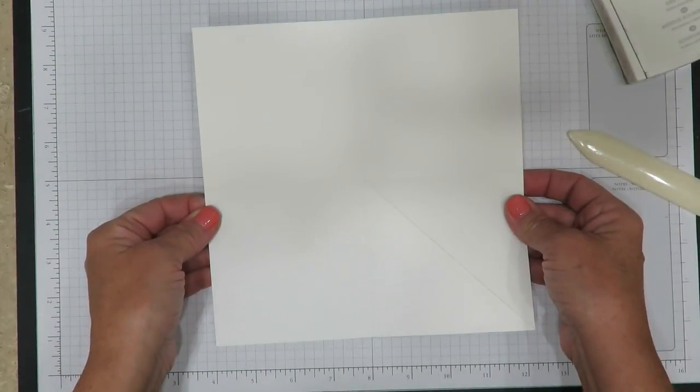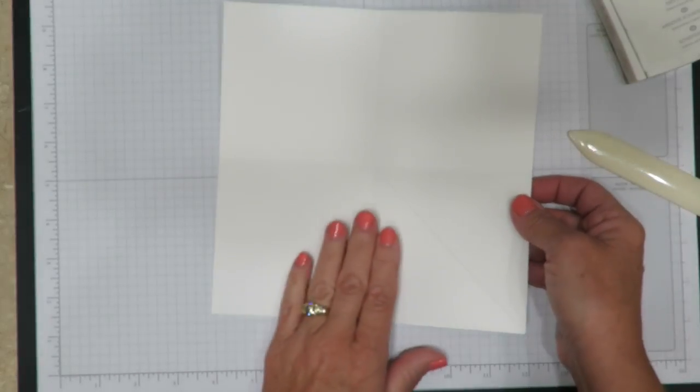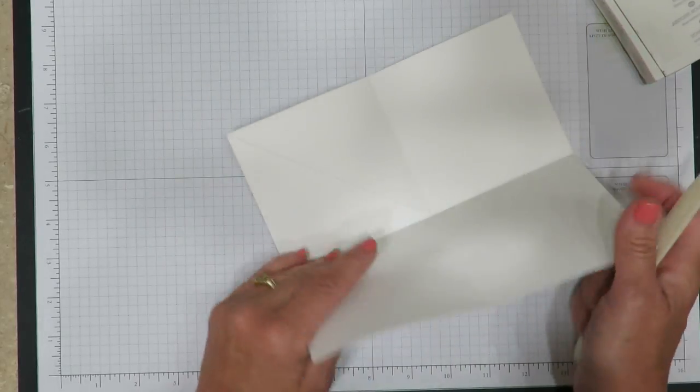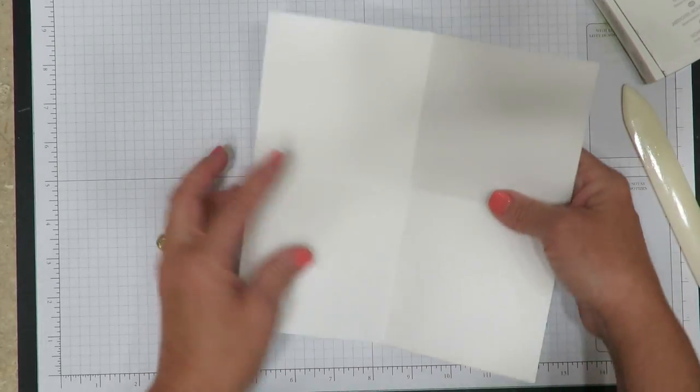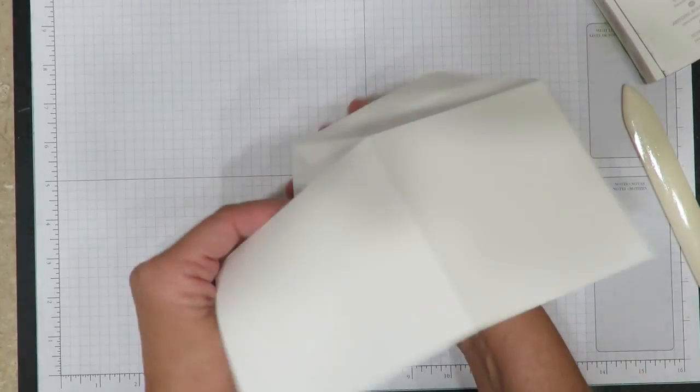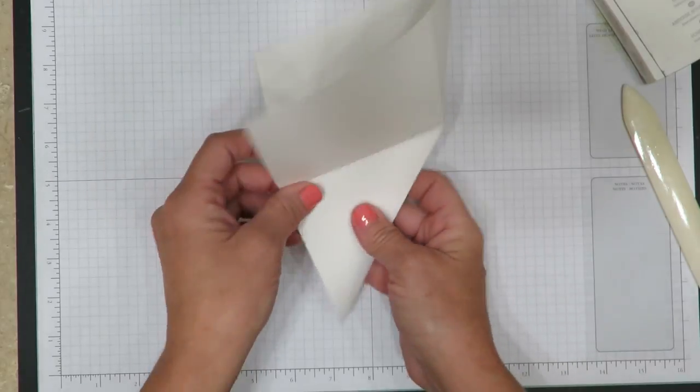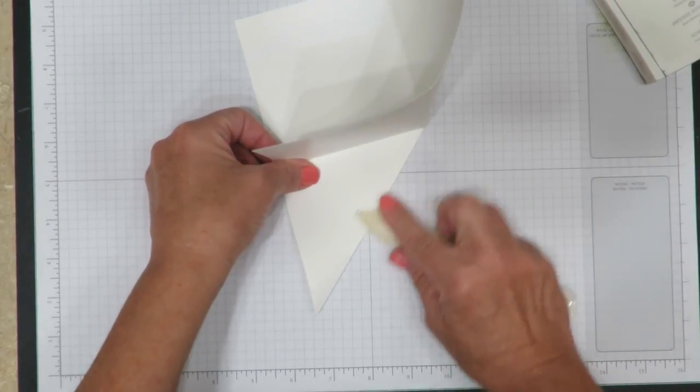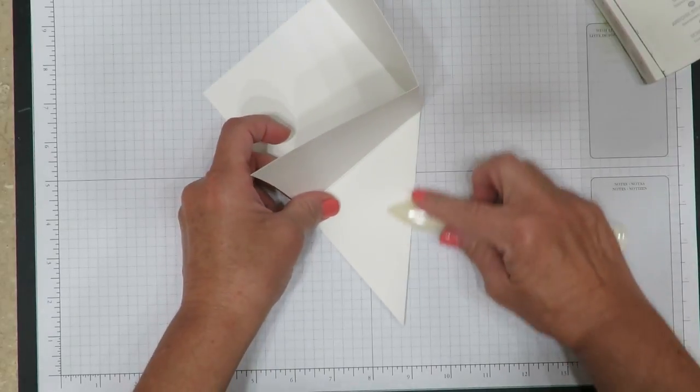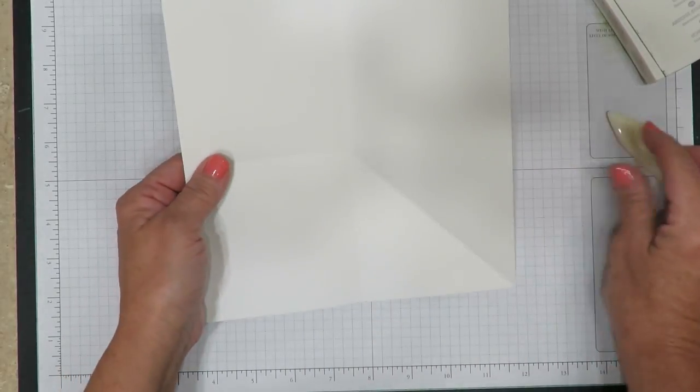Now that we have it all scored we're going to use our bone folder to reinforce those scored lines. So I'm going to fold it in half. I'm going to go the other way just to reinforce that. Remember this diagonal line that's right here? I'm going to use our bone folder again to crease up in each direction because I want you to reinforce this so that it's a little bit more pliable when we go to use the card.